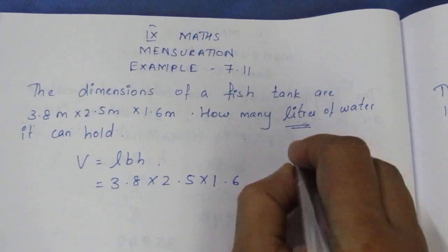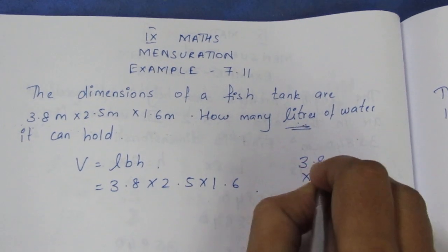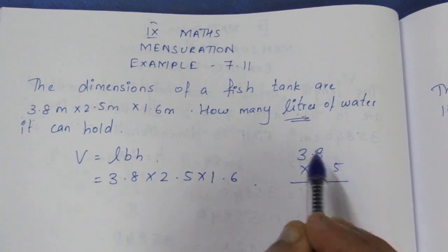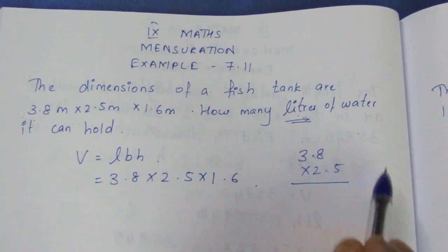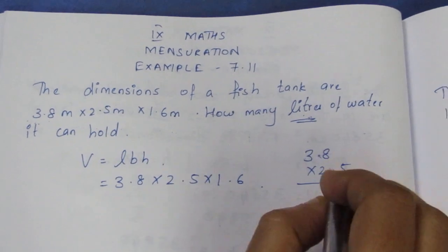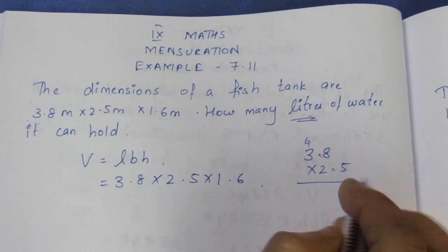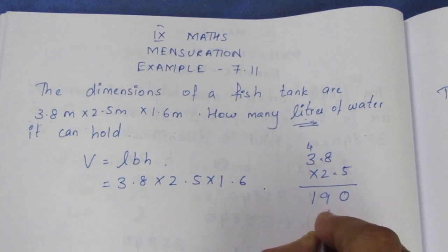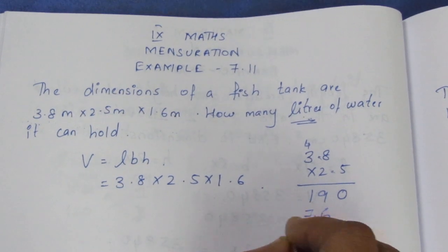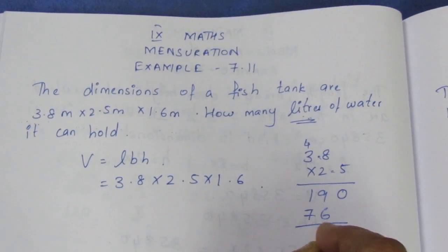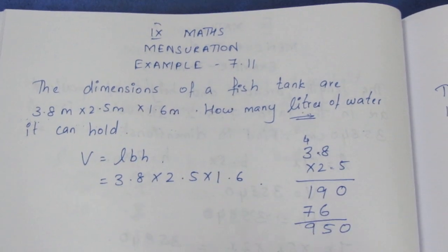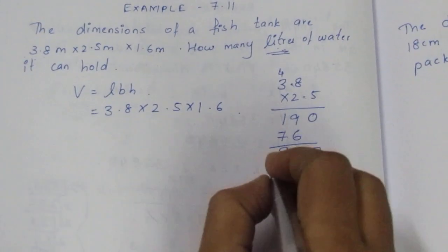We multiply 3.8 times 2.5. The numbers multiply. 8 times 5 is 40, 5 times 3 is 15 plus 4 is 19. 2 times 8 is 16, 3 times 2 is 6 plus 1 is 7. We get 9.50.